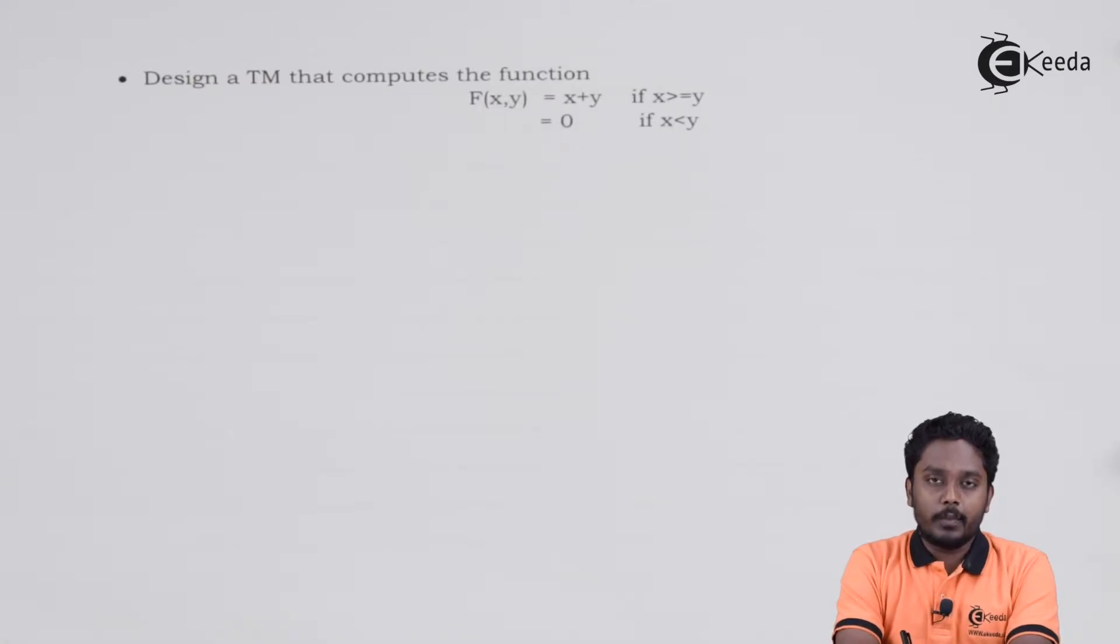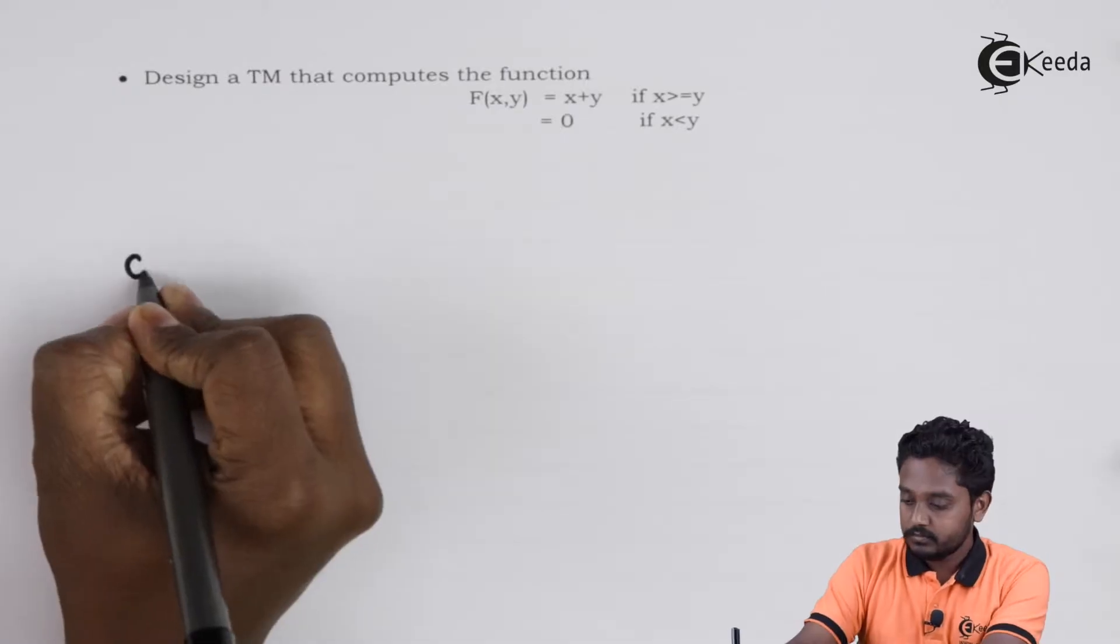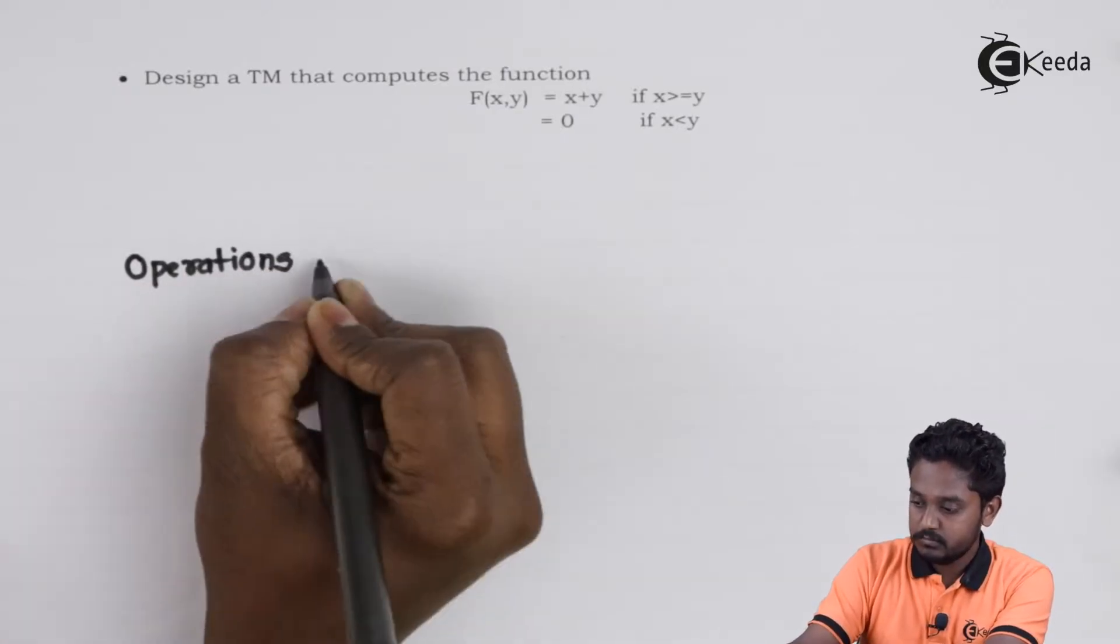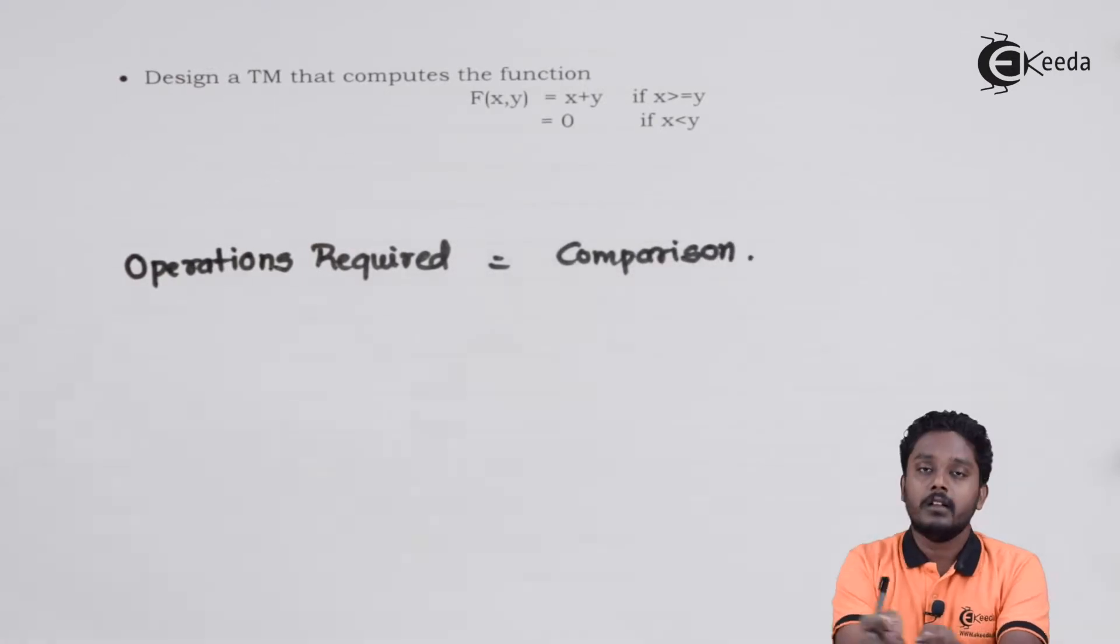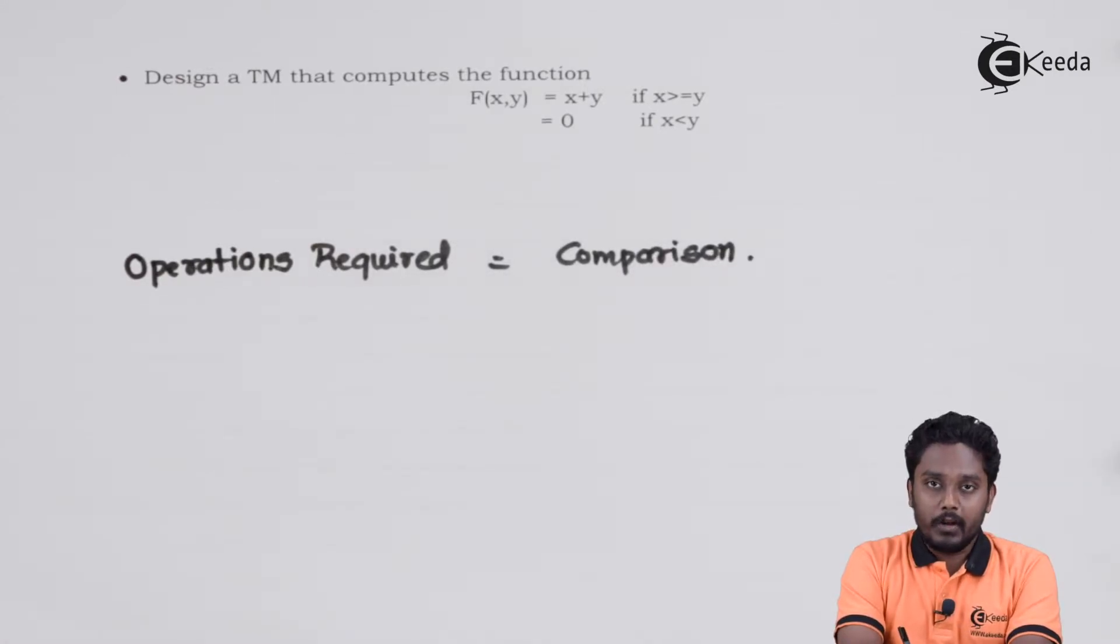We need three operations over here. The first one is a comparison. The comparison is required because we need to verify whether x is greater than or equal to y or x is less than y. We have already seen that a Turing machine could act like a comparator.